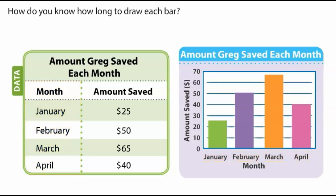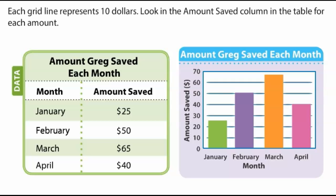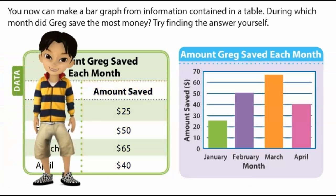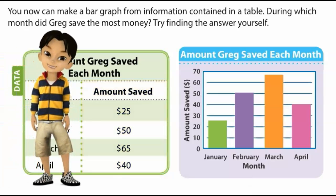How do you know how long to draw each bar? Each grid line represents $10. Look in the Amount Saved column in the table for each amount. You now can make a bar graph from information contained in a table. During which month did Greg save the most money? Try finding the answer yourself.